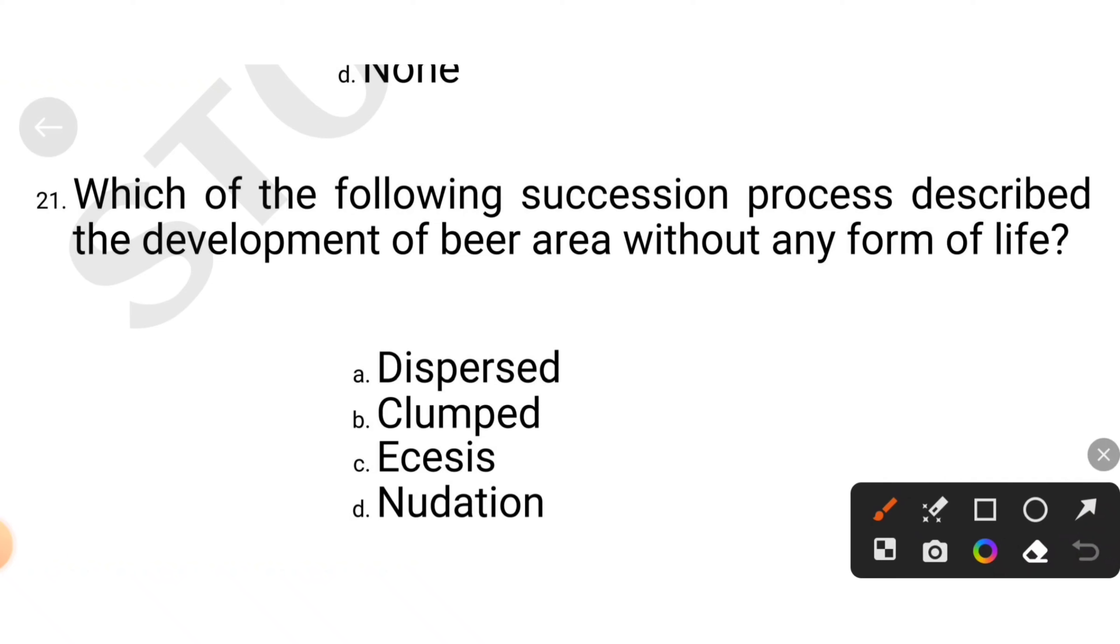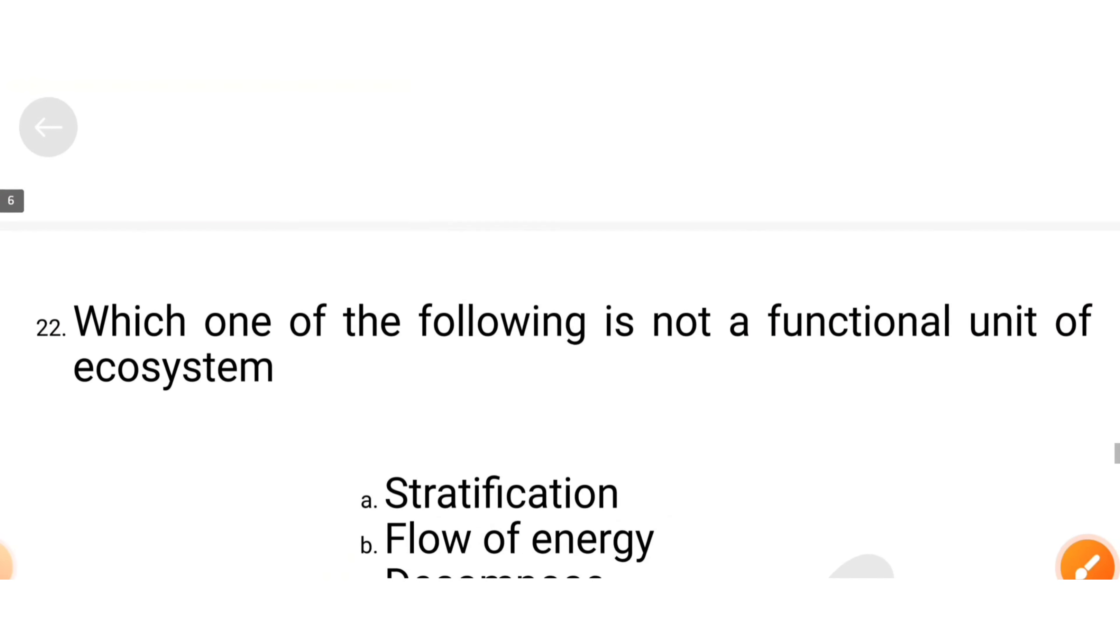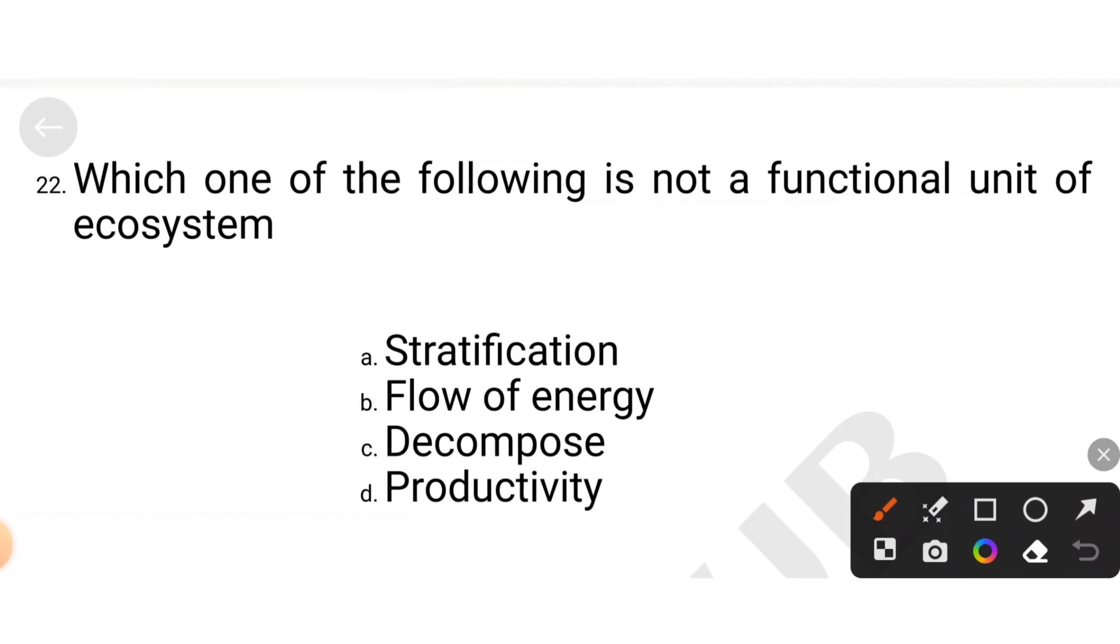Which one of the following is not a functional unit of ecosystem. Stratification, flow of energy, decomposers, or productivity. See productivity, decomposers, flow of energy in ecosystem. What does not happen? Stratification. This option, stratification.